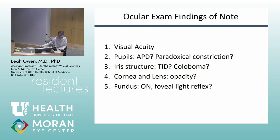When evaluating a child with nystagmus, you want to know if they're tracking at all, since these kids are often too young for formal visual acuity testing. If they can see, it's probably not a terrible retinal degeneration. Some retinal conditions like Leber's and congenital stationary night blindness have a paradoxical constriction of the pupil when you dim the lights — a normal pupil would dilate, but they do the opposite. This is not 100% sensitive but suggests a retinal problem.